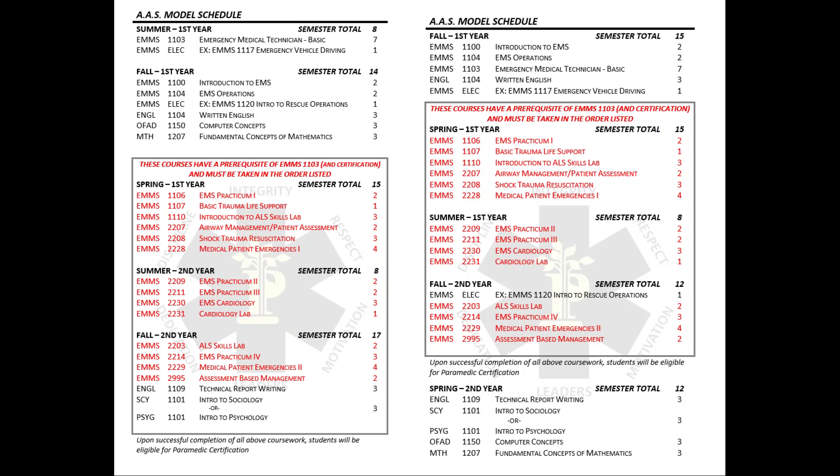On the left is our traditional model schedule, where this would be a high school graduate coming right into college, beginning in our program in the summer, taking that EMT basic class, EMMS 1103. That is the one-semester, seven credit hour class to obtain the EMT basic certification. It is offered every semester — summer, fall, and spring — so you can begin taking it at any point or any term of enrollment.